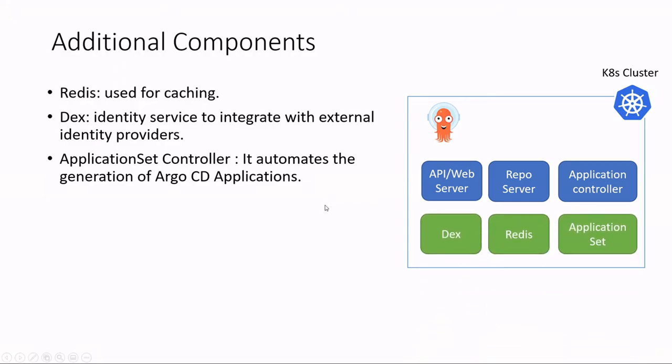There are more components to explore. Redis is used for caching, and Dex is an identity service that integrates with external identity providers, such as integrating with GitHub.